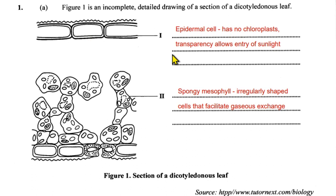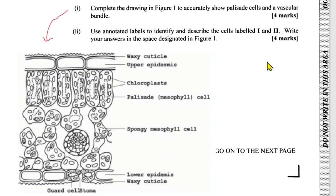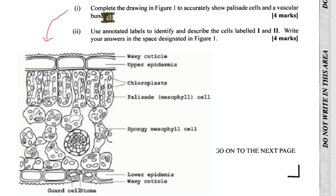This allows the epidermal cell to be transparent, which facilitates the entry of sunlight. Down here we have the spongy mesophyll cells. These are irregularly shaped and facilitate gaseous exchange. We can see that they have large air spaces, which allow air and water vapour to diffuse in and out through the stomata or the guard cells.